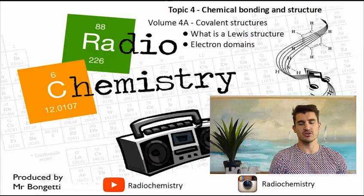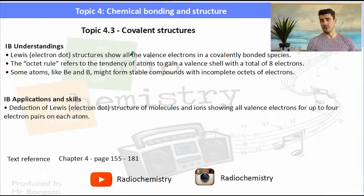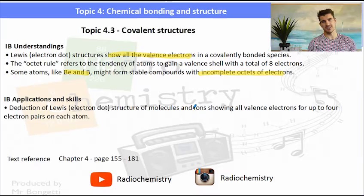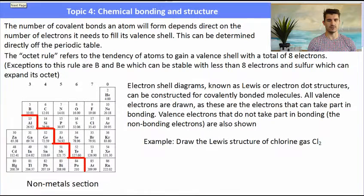What is a Lewis structure? We also talk about electron domains. The IB understandings focus around Lewis structures. We also need to review the octet rule, and then we look at some exceptions to that octet rule. Mainly in the applications, we need to be able to deduce or draw the Lewis dot structures for a number of different compounds.